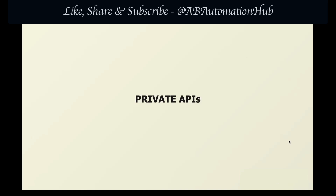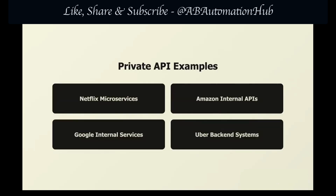Looking at real-world examples of private APIs: Netflix runs on hundreds of microservices — the recommendation engine, the video player, the user profile system, and the billing system all talk to each other via private APIs. Amazon probably has the most complex private API ecosystem in the world — their warehouse system talks to inventory tracking, which talks to shipping logistics, which talks to customer notification. When you order something, dozens of private APIs coordinate, checking stock, reserving your item, routing to the nearest warehouse, and scheduling delivery.